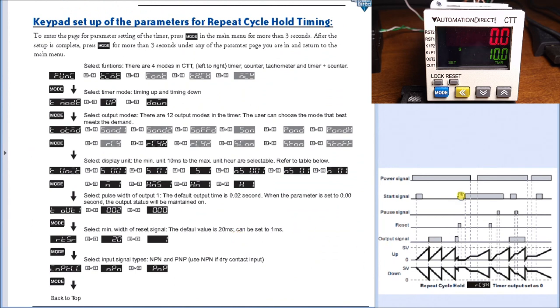If we look at the timing chart itself, there are two different modes depending on whether or not the output signal is held. In our case here we have the timing cycle hold, so every time it hits the set value the output will turn on.